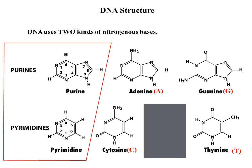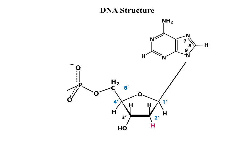The pyrimidines — the smaller ones — are cytosine and thymine. Adenine only pairs with thymine, and guanine always pairs with cytosine. Let's look at how the nitrogenous base is attached to the sugar-phosphate backbone at carbon number one prime of that sugar.